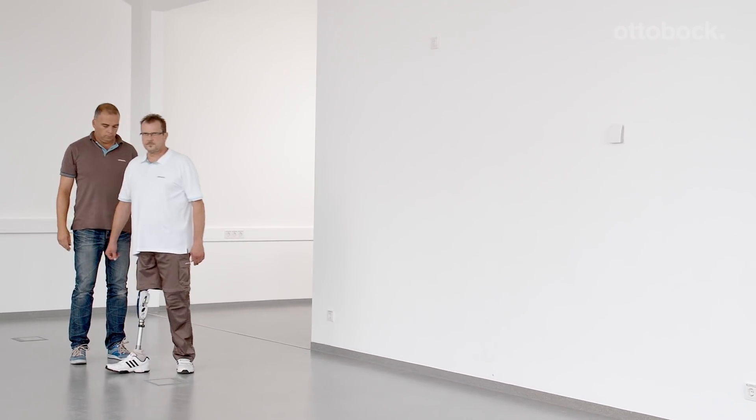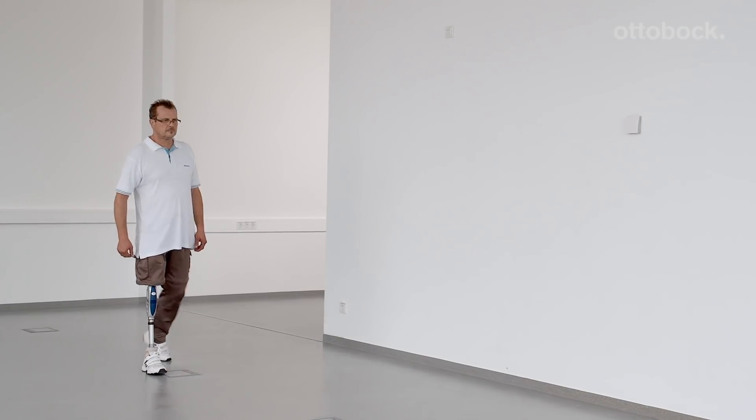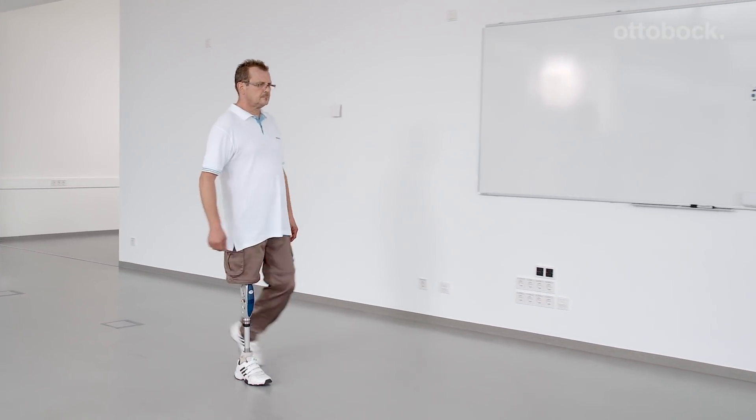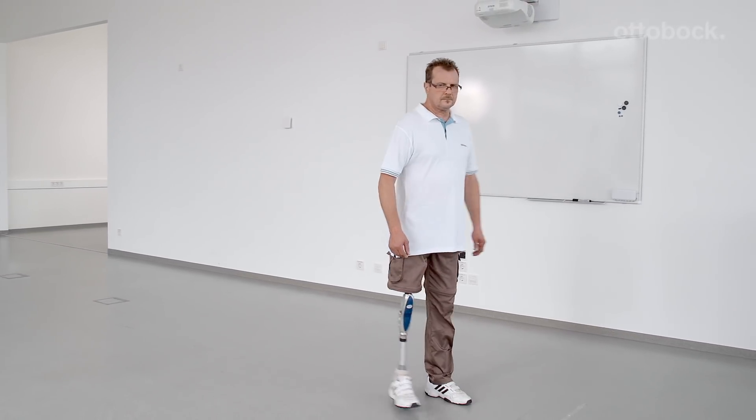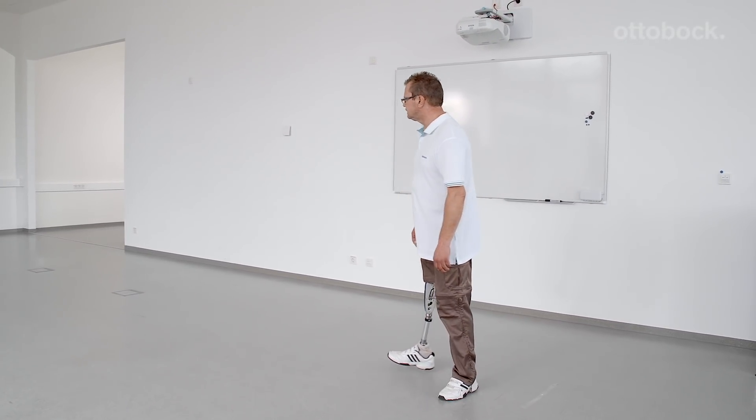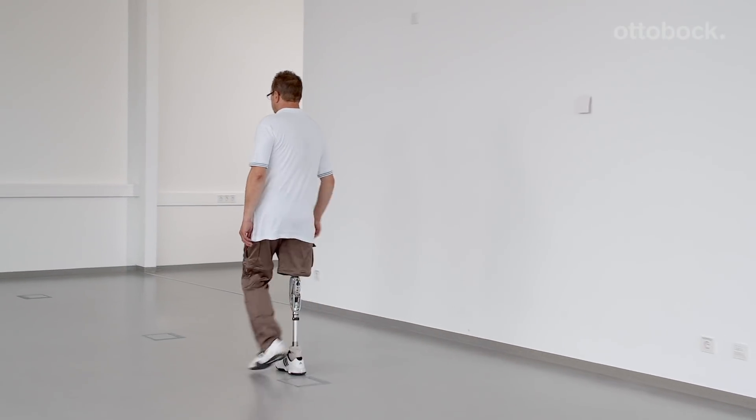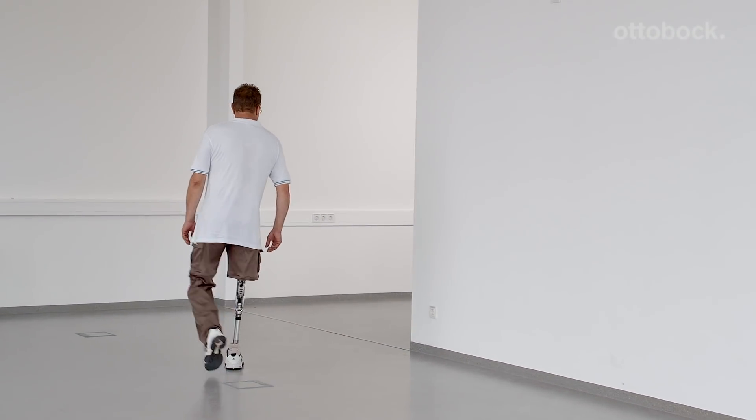The progressive damping of the 3R60 prevents a hard extension stop, resulting in increased natural movements and comfortable end position damping for a large range of walking speeds. Now, the knee is set optimally for the end user and further walking exercises can be completed.